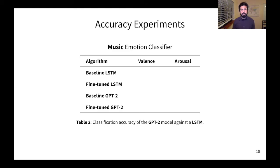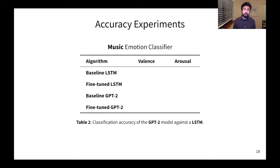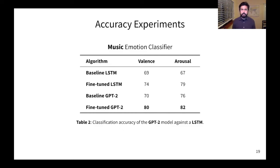We also analyze the accuracy of our music emotion classifier. And here we compare the GPT-2 approach against the LSTM method. For both of these methods, we compare the baseline and the fine-tuned versions. The baseline versions were trained only on labeled data, whereas the fine-tuned versions were pre-trained on unlabeled data. Looking at the results, we can see that the fine-tuned GPT-2 outperformed all the other methods. Comparing the baseline and the fine-tuned versions of the GPT-2, we can see that for valence, we got a boost of 10%. And for arousal, we got a boost of 8% accuracy.